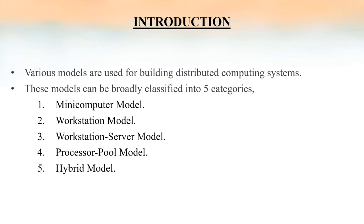We can start with an introduction. As we all know, Distributed Computing Systems are a collection of computers which are interconnected through a communication network. In order to build such a system, we have five different categories of models: Mini-Computer Model, Workstation Model, Workstation Server Model, Processor Pool Model, and finally Hybrid Model. We are going to discuss about all these models in the upcoming slides.